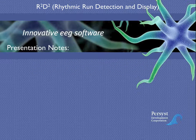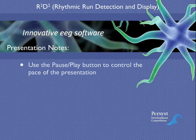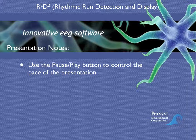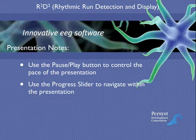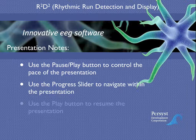At any time during the presentation, use the pause slider on the QuickTime player to stop and view any slide in detail. You can navigate anywhere within the presentation by using the progress slider located at the bottom of the player window. Select the play button to resume the presentation.